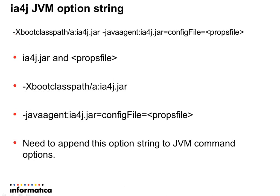Before we get into troubleshooting, let's understand what the trace options string contains. Since it's a tool for Java apps, it has a jar named IA4J.jar that contains the Java agent, and a props file that contains the instructions for the agent about the classes or methods that need to be instrumented. The details of the jar and props file are passed to the service through JVM command options.